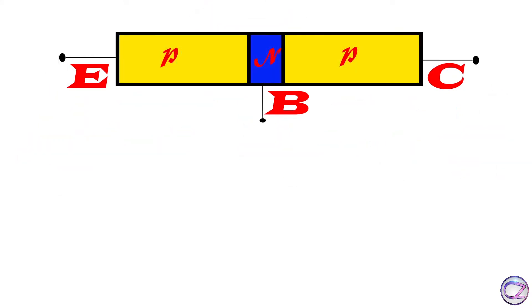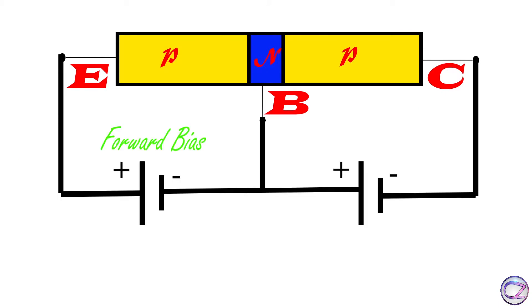For PNP transistor, like I said, you have to connect emitter and base in forward bias and collector and base in reverse bias. Positive charge carriers, I mean holes, move to the emitter and go into the base. Like the NPN transistor, 5% holes go back to the power source and 95% holes move through the collector. Now holes move fast to the power source and complete the circuit because of the reverse bias.